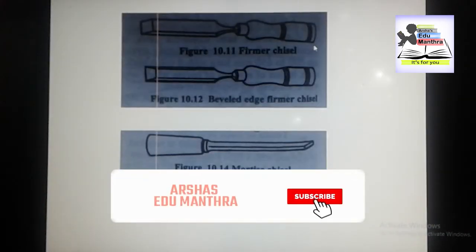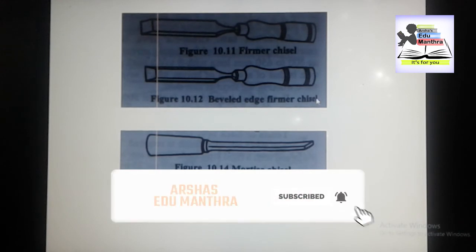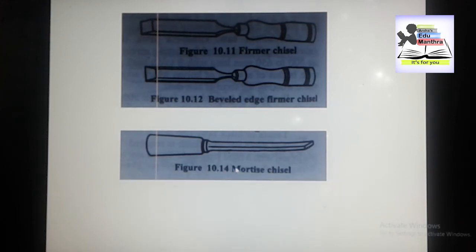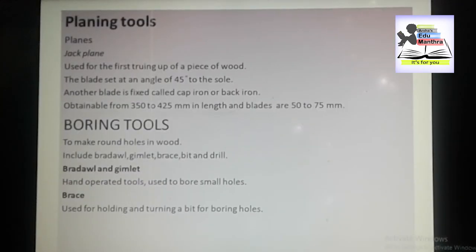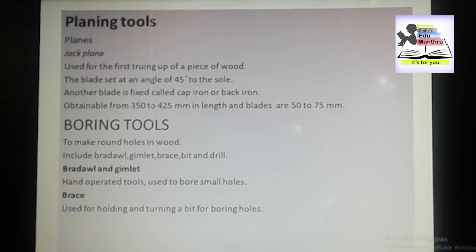Here we have the figures for the firmer chisel, beveled edge firmer chisel, and mortise chisel. Next we have planing tools — specifically planes. The plane can be likened to a chisel set into a block of metal or wood, and its blade cuts exactly like a wide chisel.